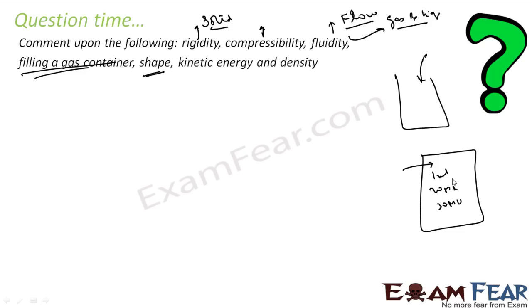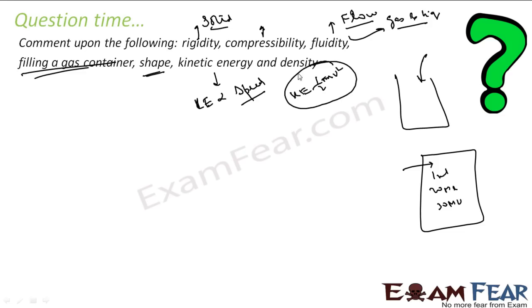The next property is kinetic energy — energy possessed by virtue of motion. Kinetic energy is directly proportional to speed; higher speed means more kinetic energy. You may have studied in physics: kinetic energy equals half mv squared, where m is the mass and v is the velocity. The particles of any matter are in constant motion and have kinetic energy. Gas has maximum kinetic energy because its particles move at higher speed, while particles of solids move at lower speed.